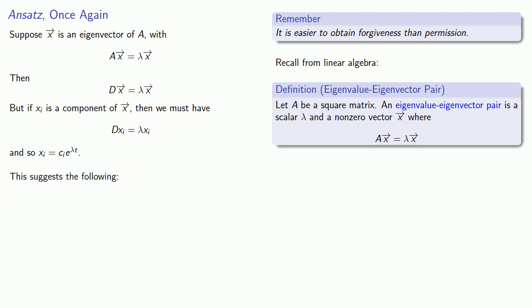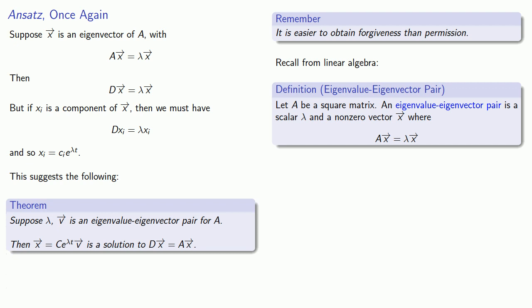And this suggests the following. Suppose lambda v is an eigenvalue-eigenvector pair for matrix A. Then x equals c e to power lambda t v is a solution to the differential equation.